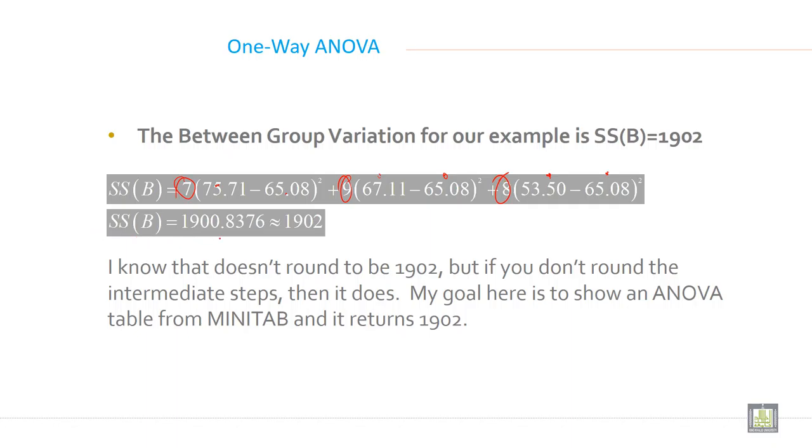So you will get SSB and it is 1902. I know that doesn't round to be 1902, but if you don't round the intermediate steps, then it does. My goal here is to show an ANOVA table from MINITAB and it returns 1902.